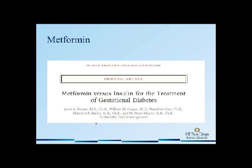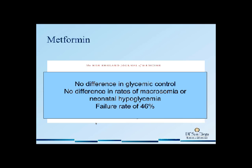The trial performed by Rowan et al. randomized patients with gestational diabetes to metformin versus insulin for the treatment of GDM. They found no difference in glycemic control between patients treated with metformin and insulin, and also no differences in rates of macrosomia or neonatal hypoglycemia. However, the failure rate for patients treated with metformin was 46% — meaning 46% needed to be started on insulin — compared to 20% in glyburide-treated patients.